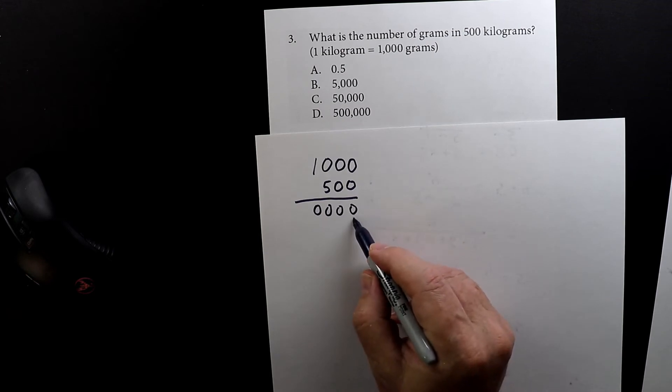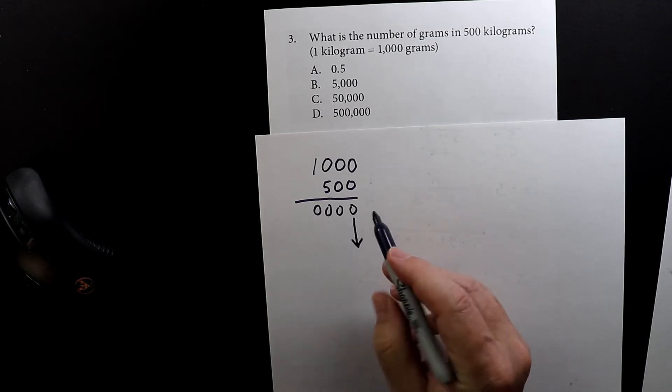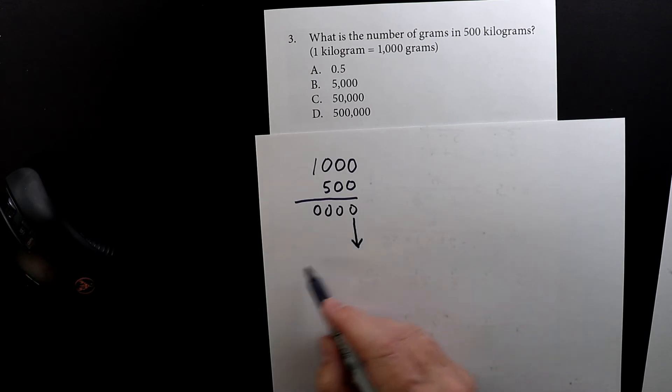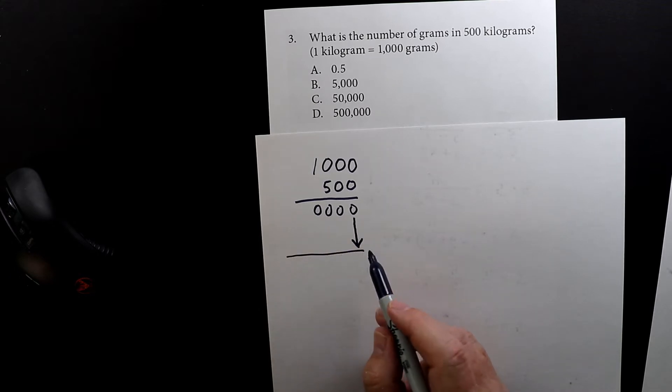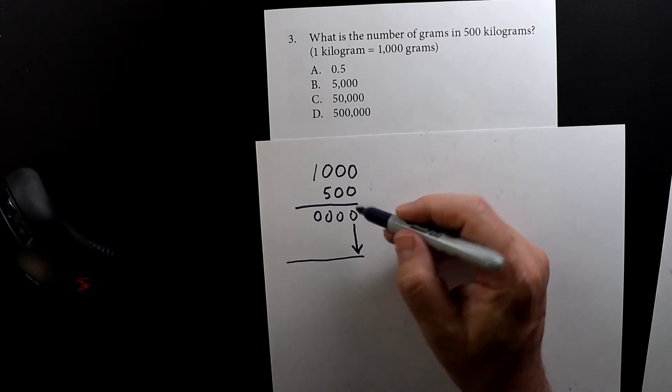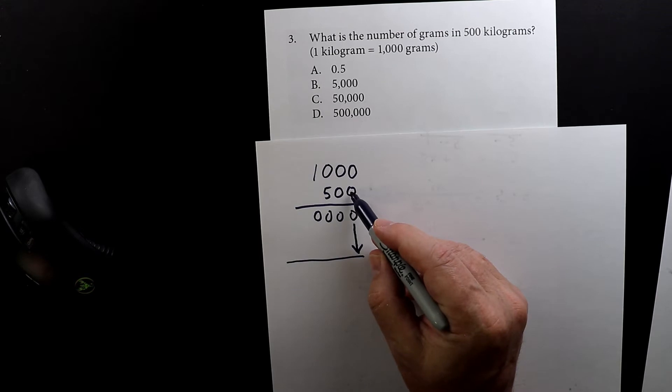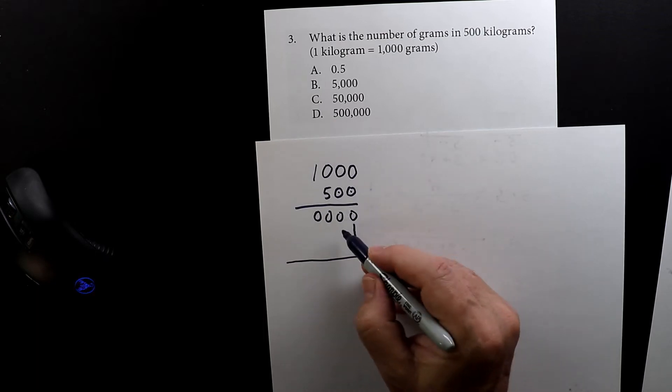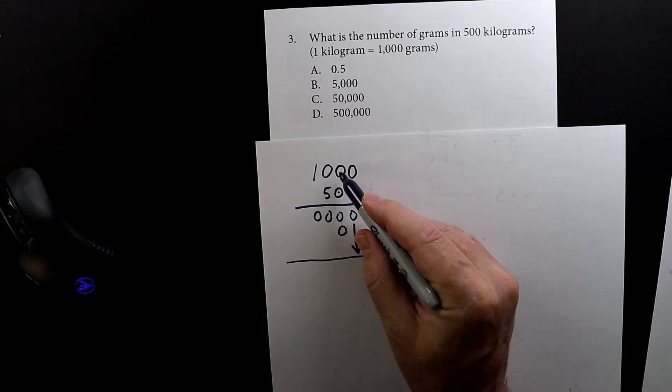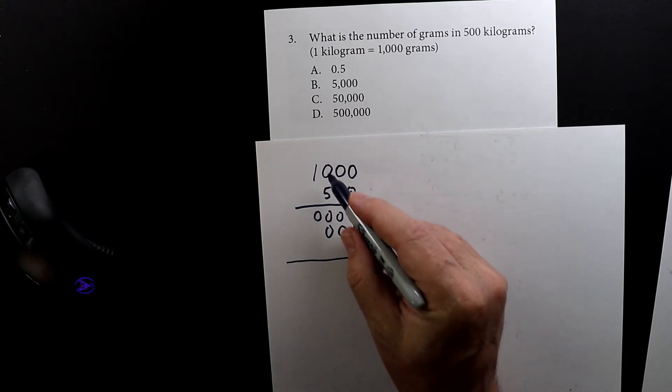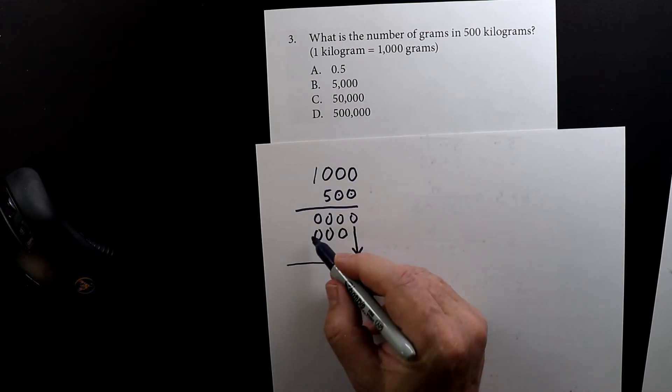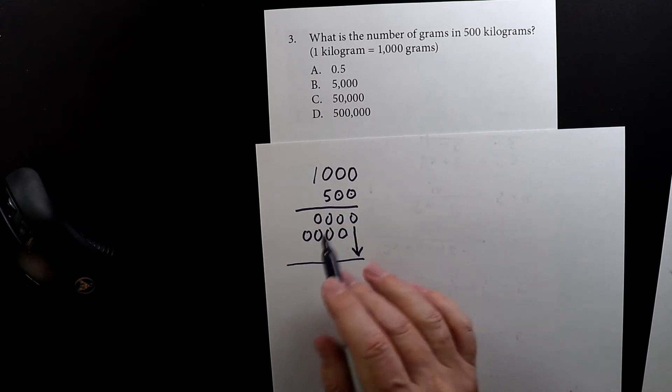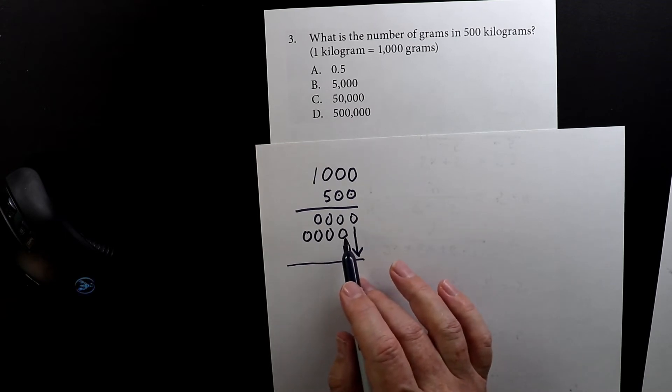Now I'm going to move over one space, and when I do that I like to put a long arrow to keep my columns nice and straight. Zero times zero is zero, zero times zero is zero, zero times zero is zero, and zero times one is still zero.